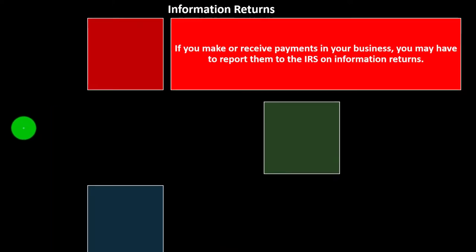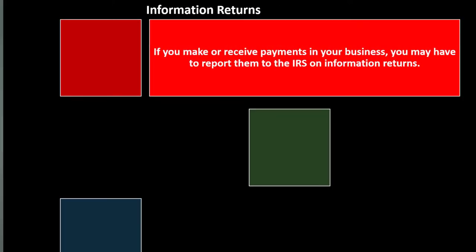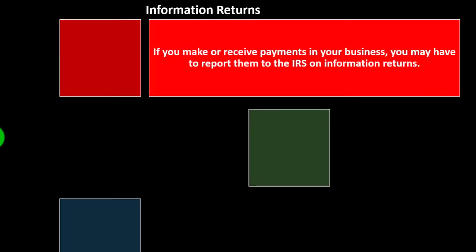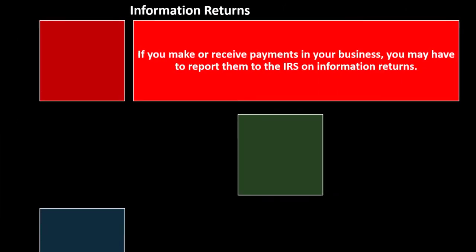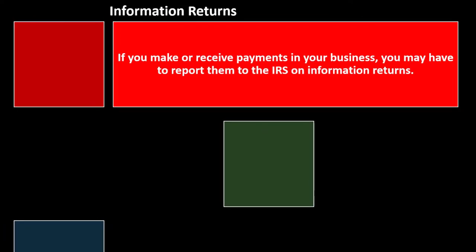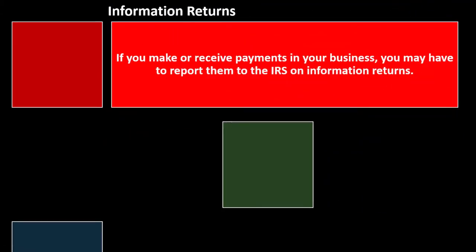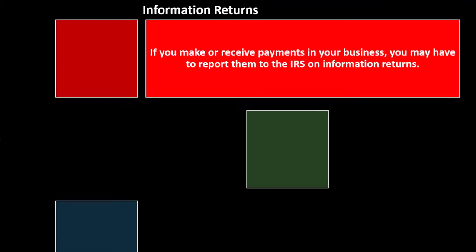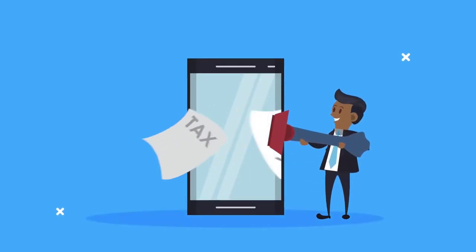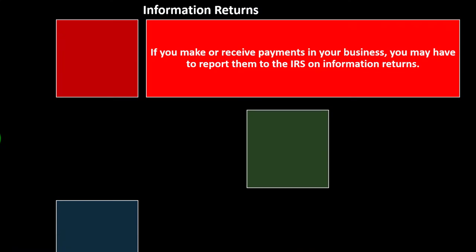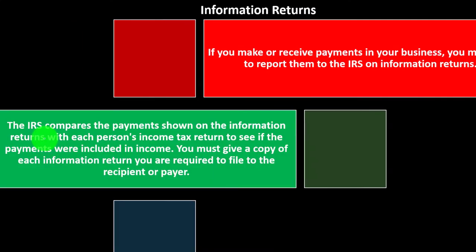Information returns are returns that basically aren't going to have taxes related to you at the point in time that you're making the return, but possibly giving information about either you or about payments that you're making to other people, so that the IRS can have that information and verify that taxes are being paid by someone somewhere. So if you make or receive payments in your business, you may have to report them to the IRS on information returns.